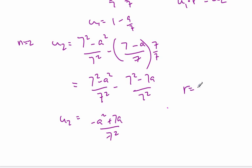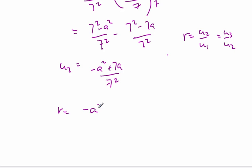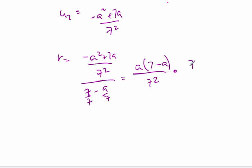To find R, I compute U_2 over U_1: R equals (7A minus A^2)/7^2 divided by (1 minus A/7). Doing the algebra — factoring out A to get A(7 minus A) on top — divided by 7^2 times 7/(7 minus A). The (7 minus A) factors cancel, and I end up with R equals A/7.